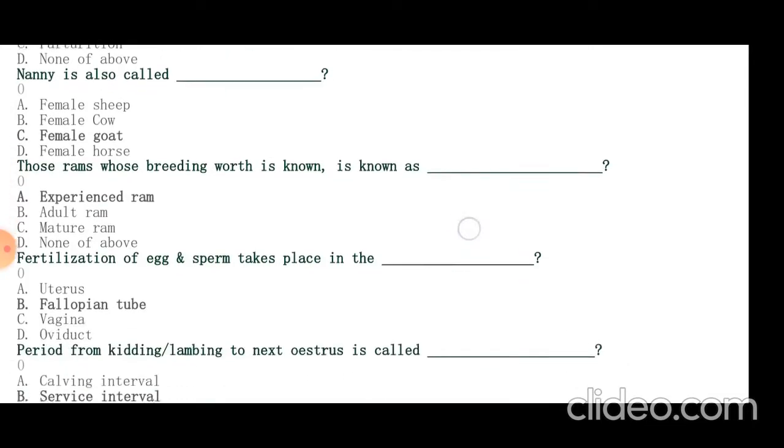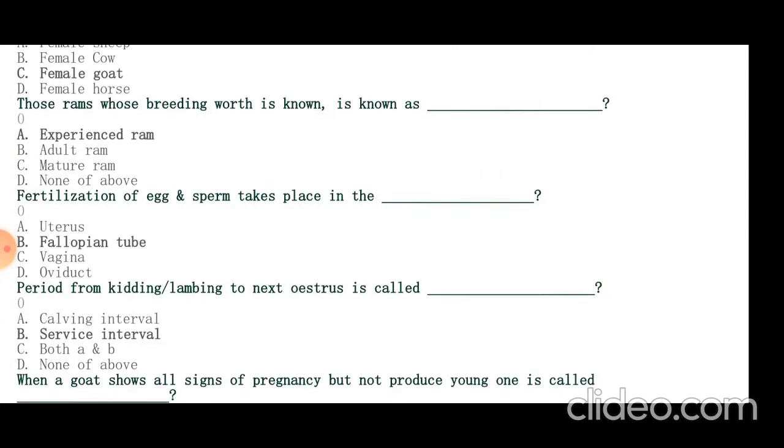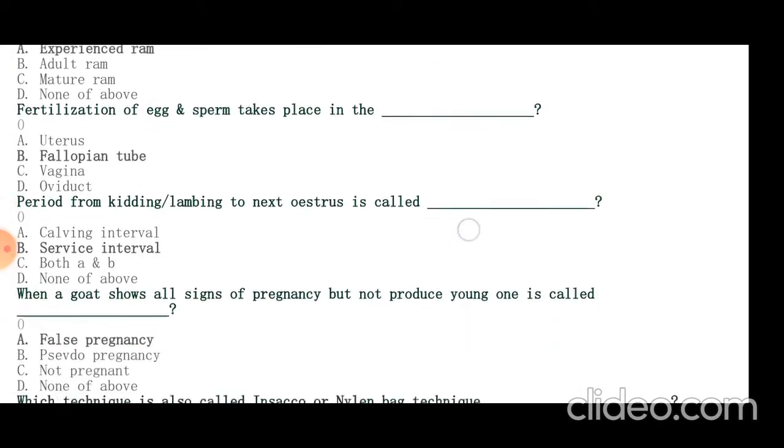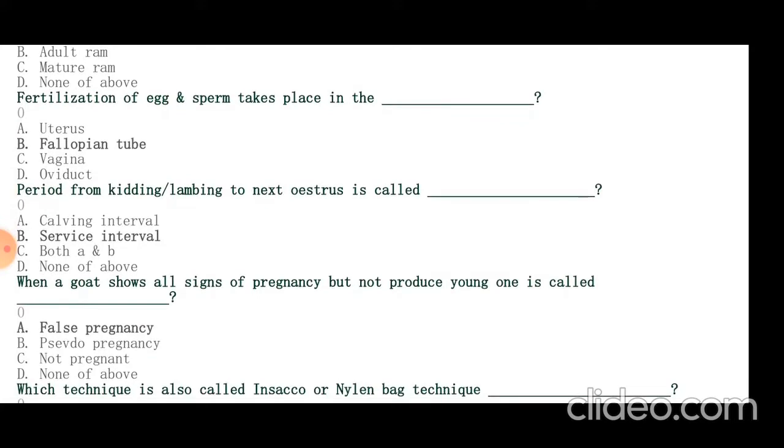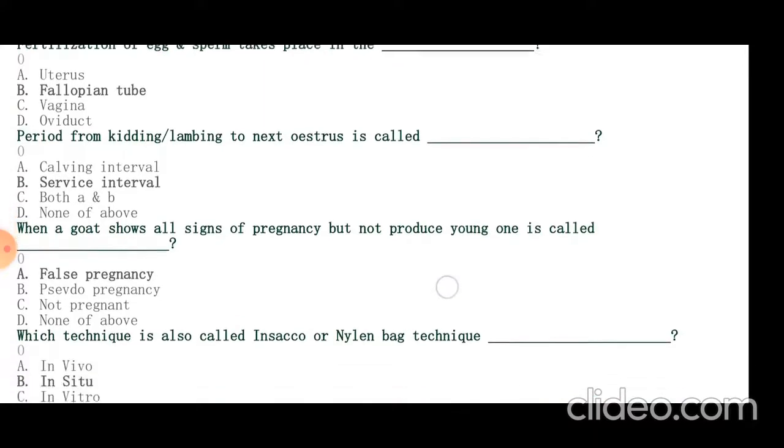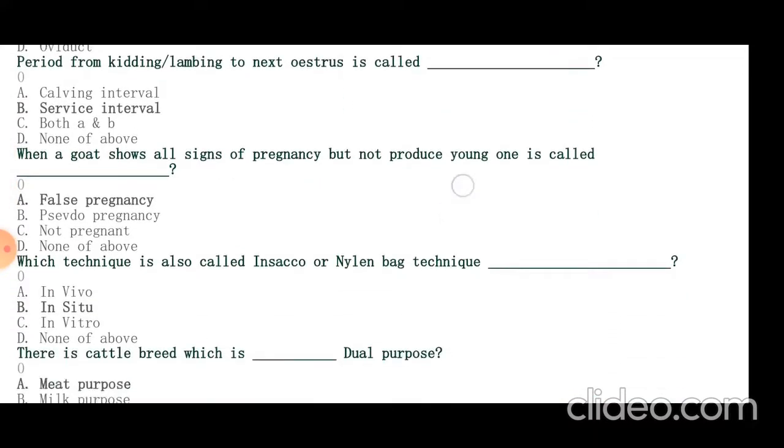Fertilization of egg and sperm takes place in fallopian tube. Period from kidding/lambing to next estrus is called service period. When a goat shows all signs of pregnancy but does not produce young one, it is called false pregnancy or pseudopregnancy.